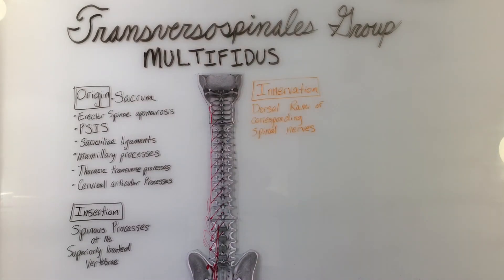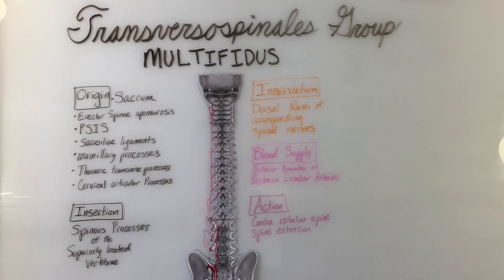The innervation is the dorsal rami of the corresponding spinal nerve. The blood supply is from the posterior branches of the posterior lumbar arteries. The action is contralateral rotation of the spine and spinal extension.